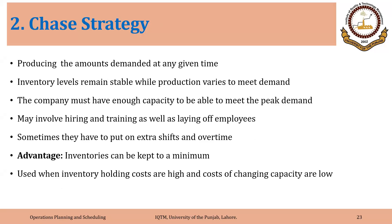In the level strategy, inventory levels varied and production was constant. Here it is just the opposite — inventory levels remain stable while production varies. The company must have enough capacity to meet peak demand. It may involve hiring and training as well as laying off employees, and sometimes they have to put on extra shifts and overtime.